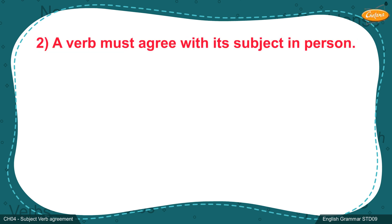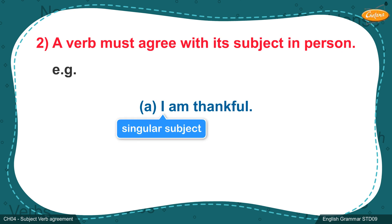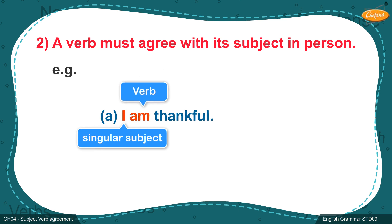Rule 2: A verb must agree with its subject in person. Example A: 'I am thankful.' The first person singular subject 'I' carries a singular verb 'am'.